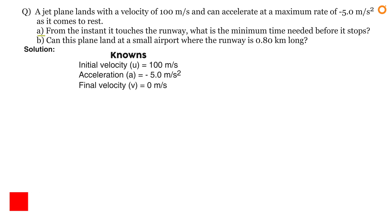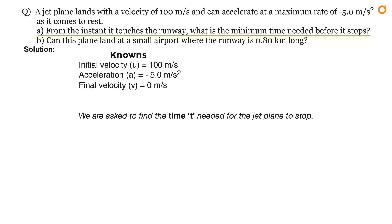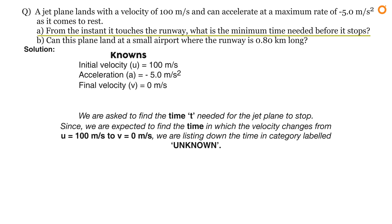Part A asks: from the instant it touches the runway, what is the minimum time needed before it stops? We are asked to find the time t needed for the jet plane to stop — that is, the time in which velocity changes from u = 100 meters per second to v = 0 meters per second. We list time t under the category 'unknown'.